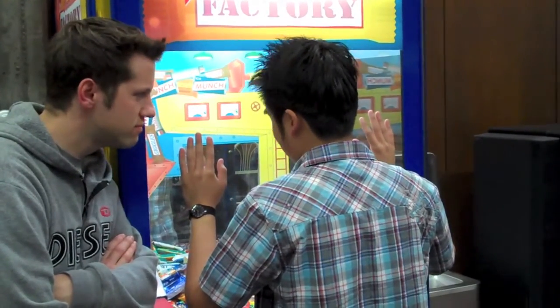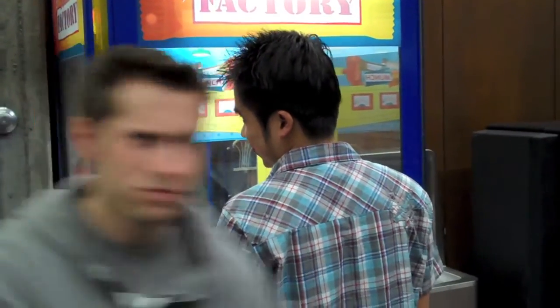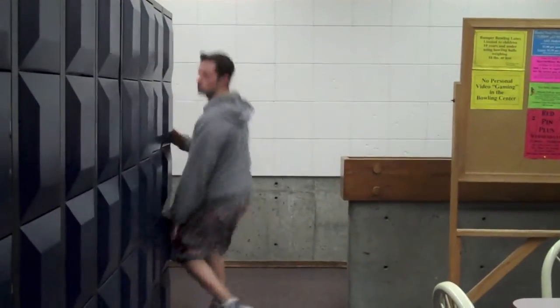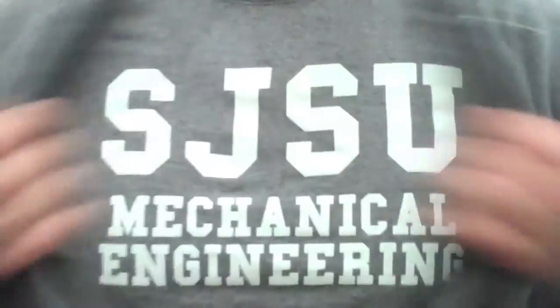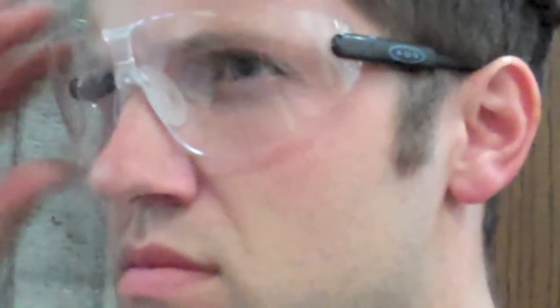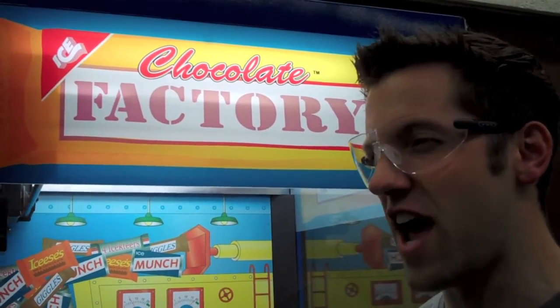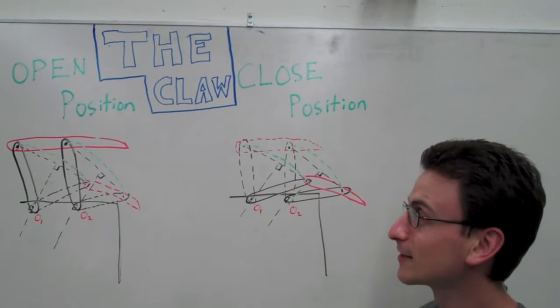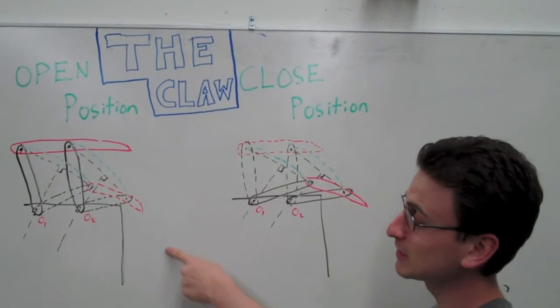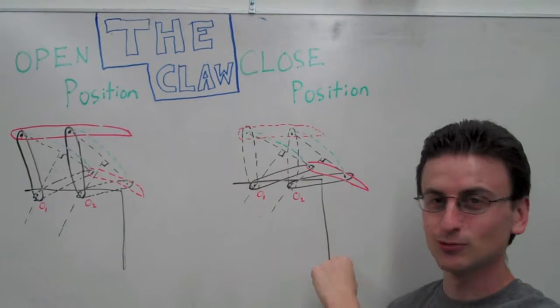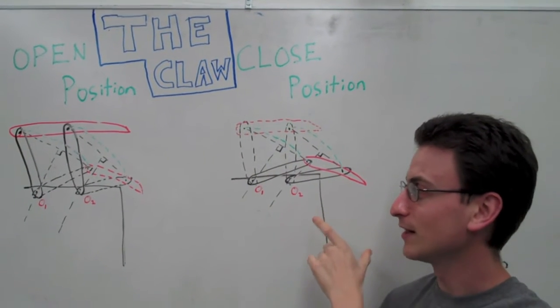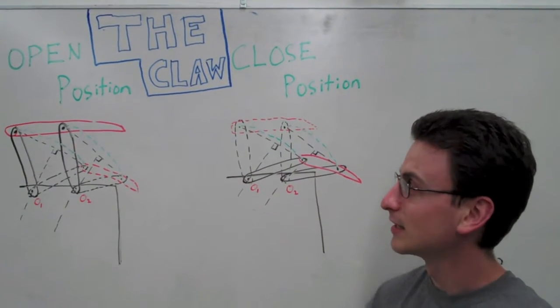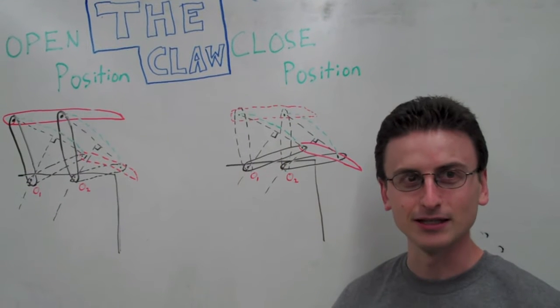What's up! This is our graphical linkage synthesis. It shows the claw in the open position and the closed position. We drew perpendicular bisectors to find the ground nodes on the base plate, and we care about the motion generation.